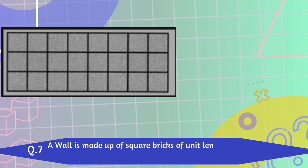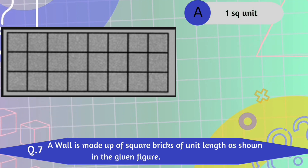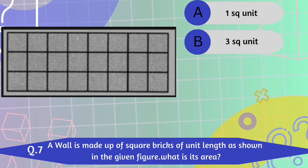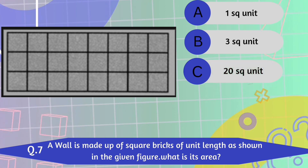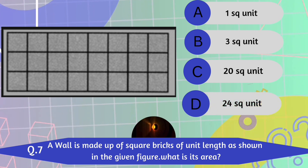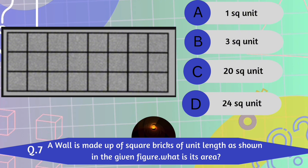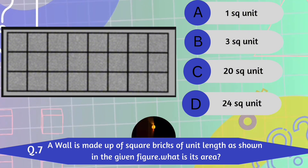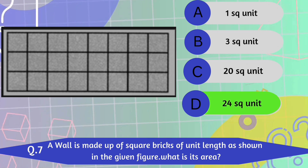Question number 7. A wall is made up of square bricks of unit length as shown in the given figure. What is its area? A. 1 square unit. B. 3 square unit. C. 20 square unit. D. 24 square unit.